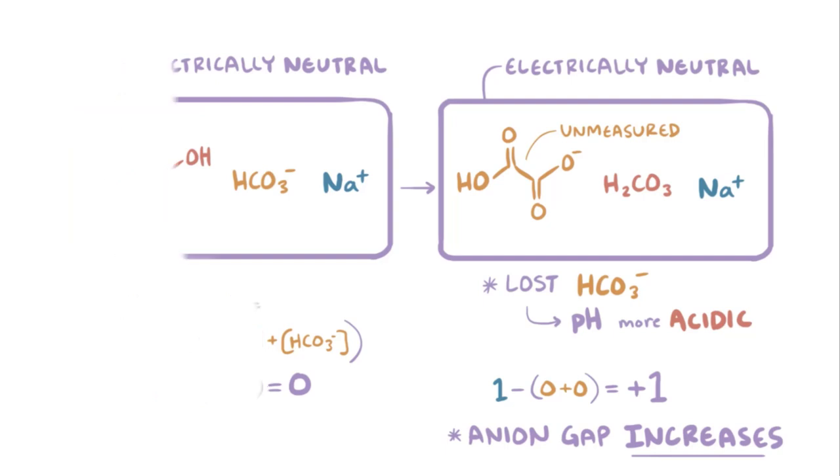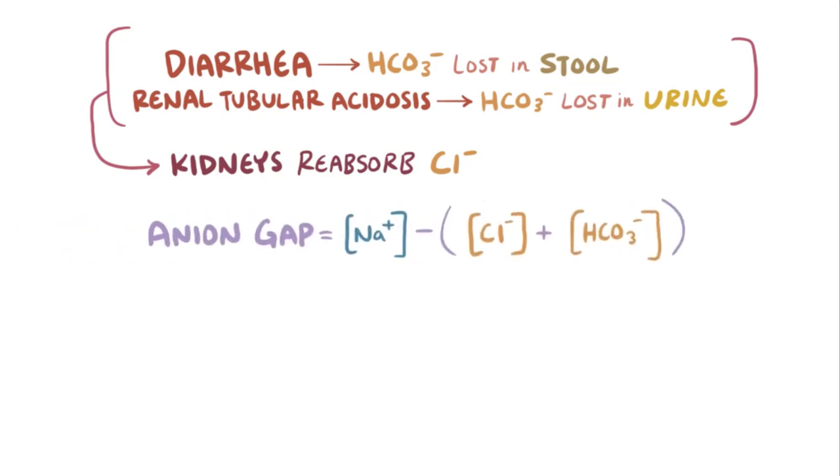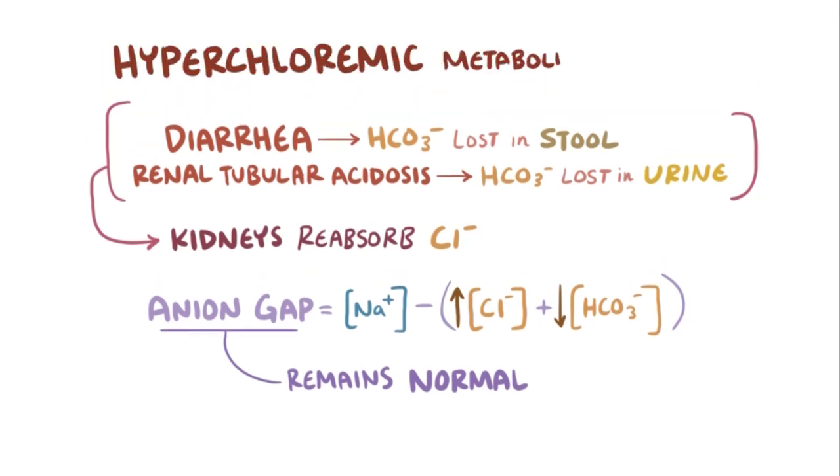But that's not what happens in all cases of metabolic acidosis. For example, with diarrhea, excessive bicarbonate gets lost in the stool, and in renal tubular acidosis, excessive bicarbonate gets lost in the urine. In these cases, the kidneys start reabsorbing more chloride ions, which build up in the plasma and replace the bicarbonate ions. Since chloride ions are measured in the equation, the bicarbonate concentration goes down, but the chloride concentration goes up. So the anion gap stays about normal. That's why a normal anion gap metabolic acidosis is sometimes called a hyperchloremic metabolic acidosis.